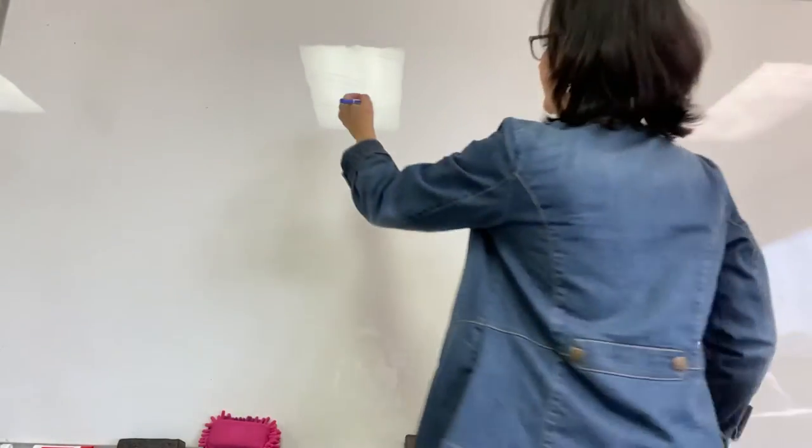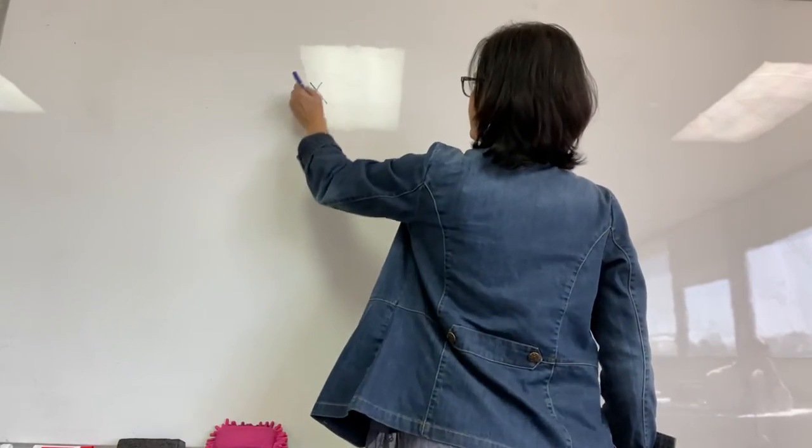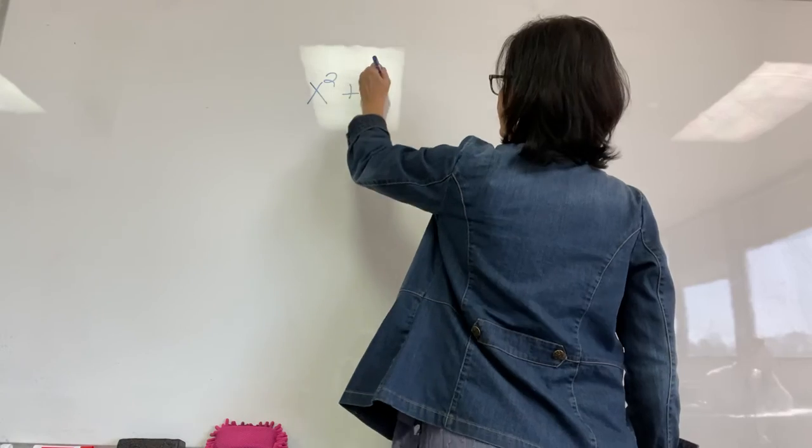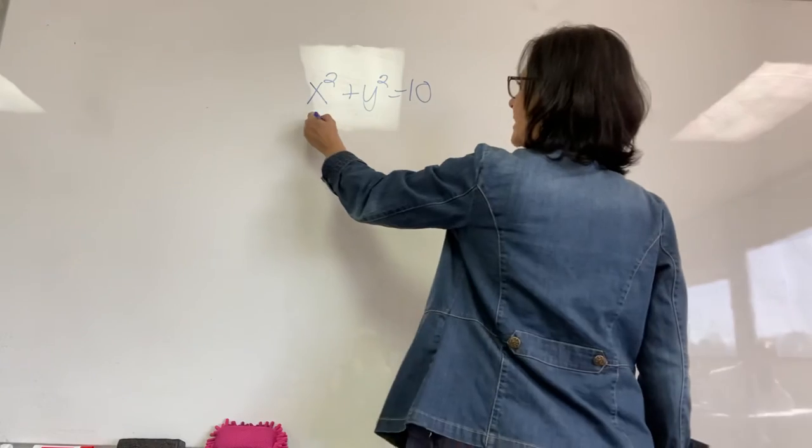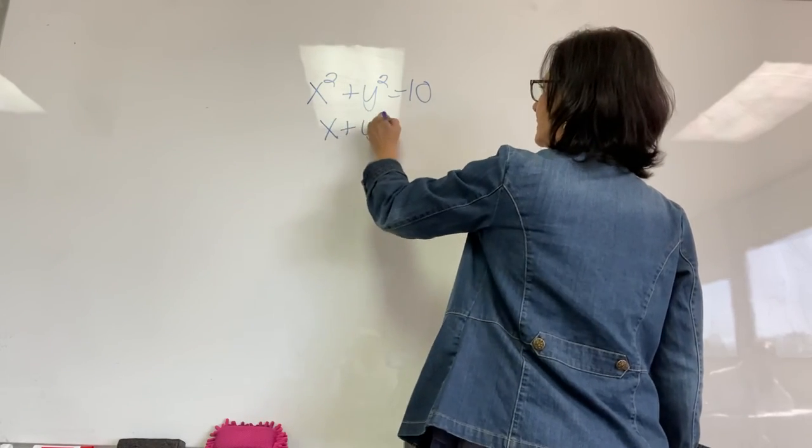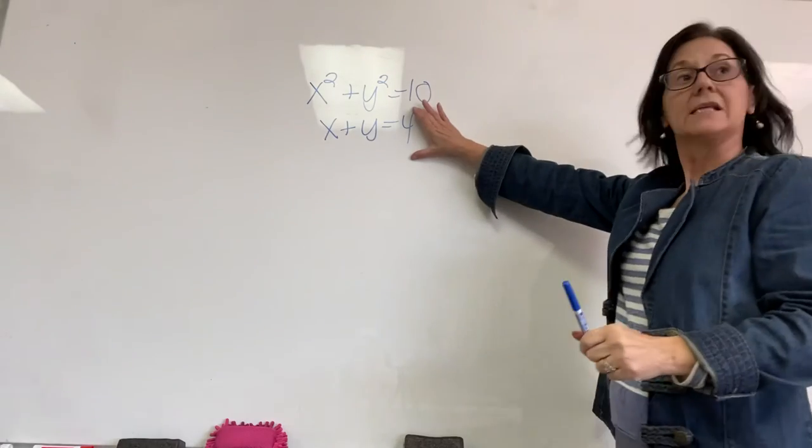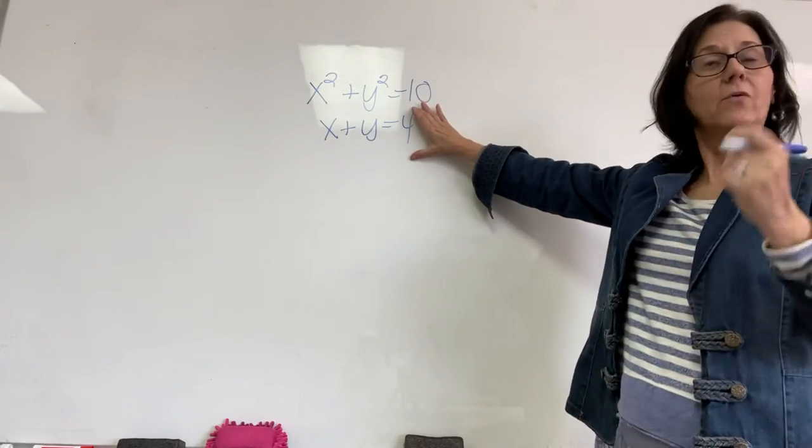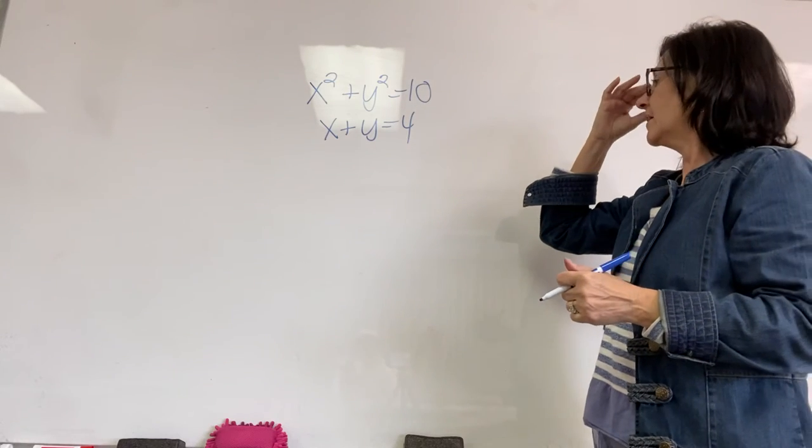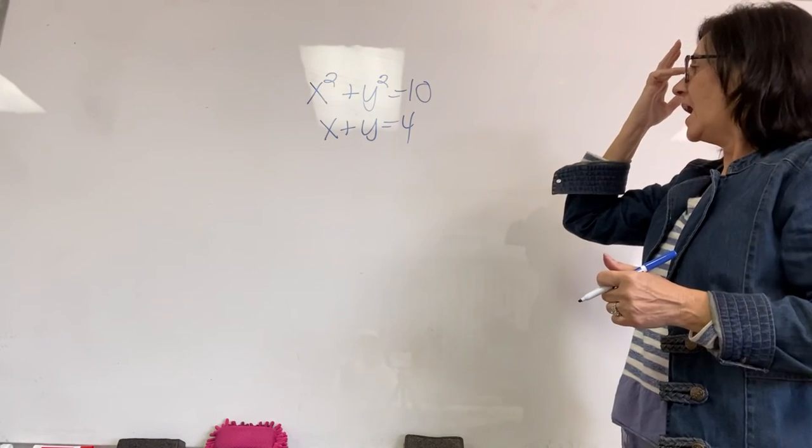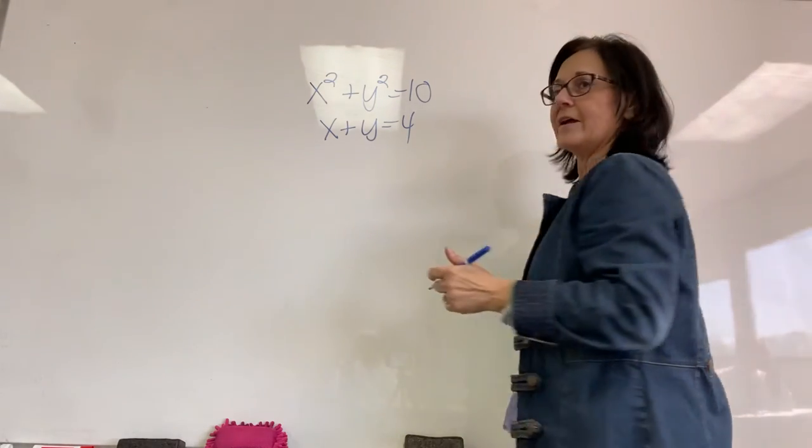x squared plus y squared equals 10. And x plus y equals 4. Someone tell me what I'm doing here. Substituting. Always taking the second equation, the linear equation, substituting it in to the second degree equation. I am going to solve for x or y.